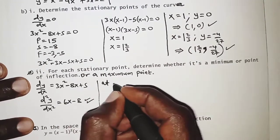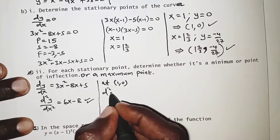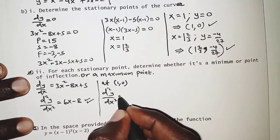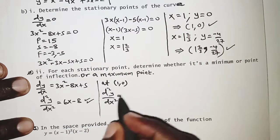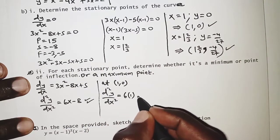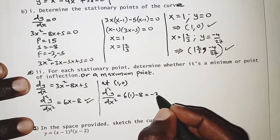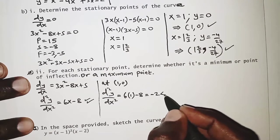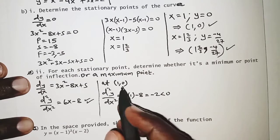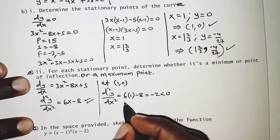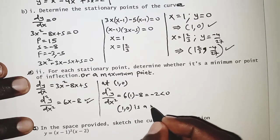At point (1, 0), we substitute x = 1 into the second derivative: d²y/dx² = 6(1) − 8 = 6 − 8 = −2. Since −2 is less than 0, the second derivative is negative, so point (1, 0) is a maximum point.